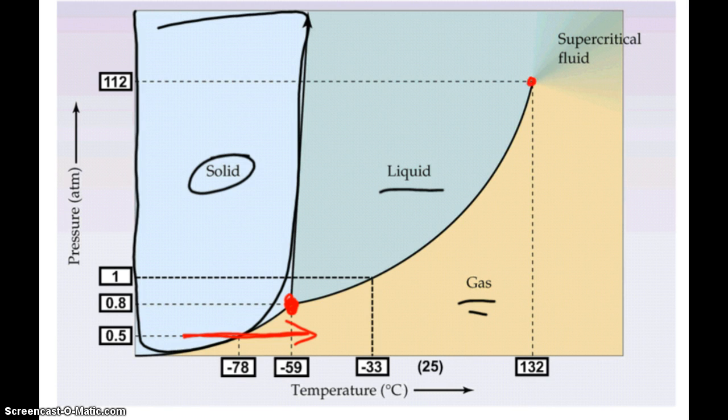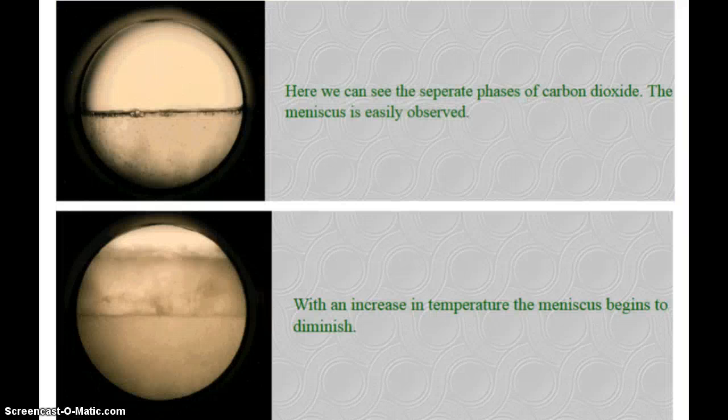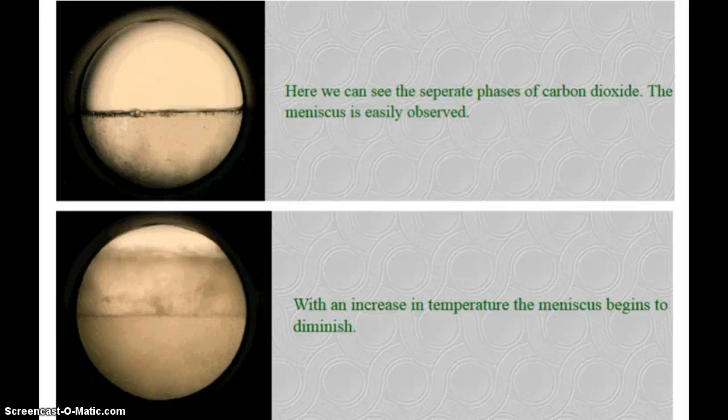And then up here is what's going to be called the critical point. Because a fun little thing happens, once a substance gets to a certain temperature and pressure, it becomes a supercritical fluid. There is no longer a definitive boundary between the liquid state and the gaseous state. Here we see the separate phases of carbon dioxide. You can see a meniscus clearly dividing the vapor and liquid phases.